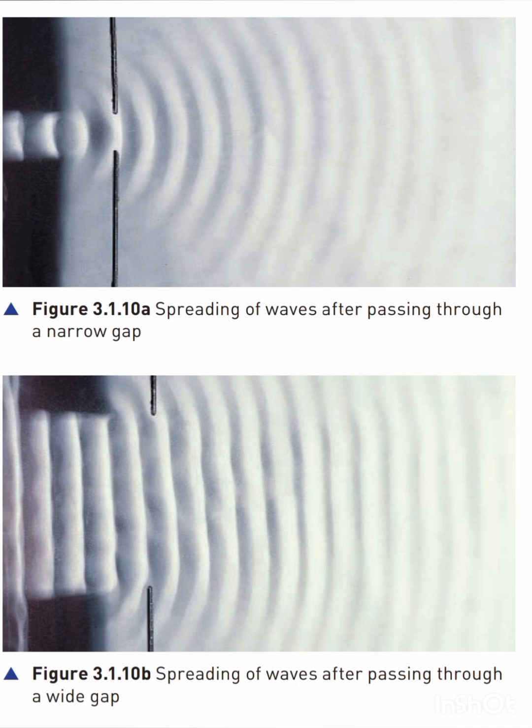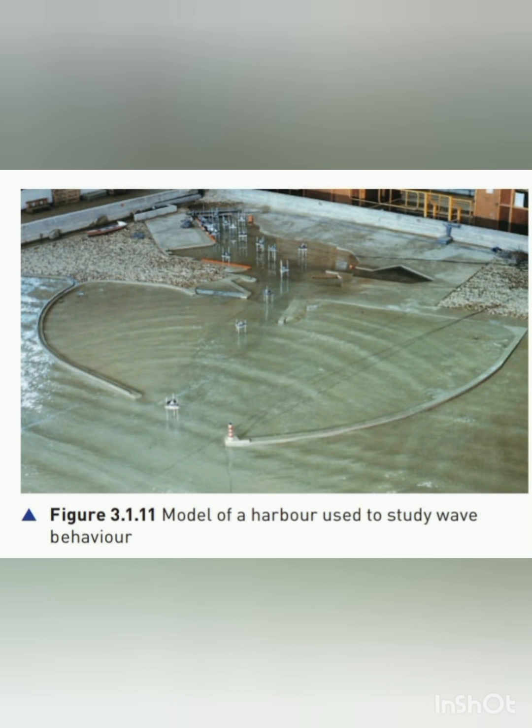Diffraction due to an edge or wide gap: in figure 3.1.10b the gap is wide — about 10 centimeters — compared with the wavelength. The wavefront remains straight, except at the edges of the gap where some curvature around the edges occurs. The spreading of waves at the edges of an obstacle is called diffraction.